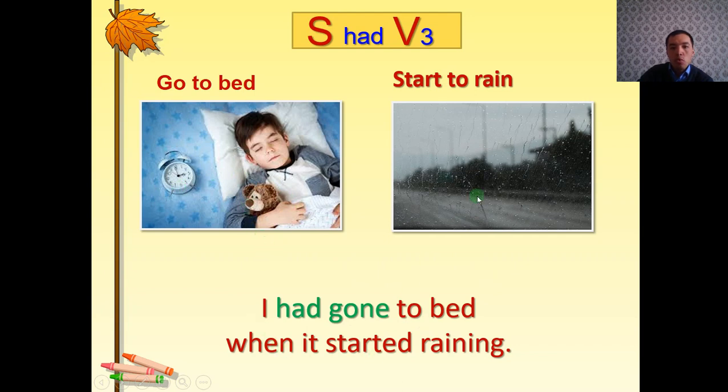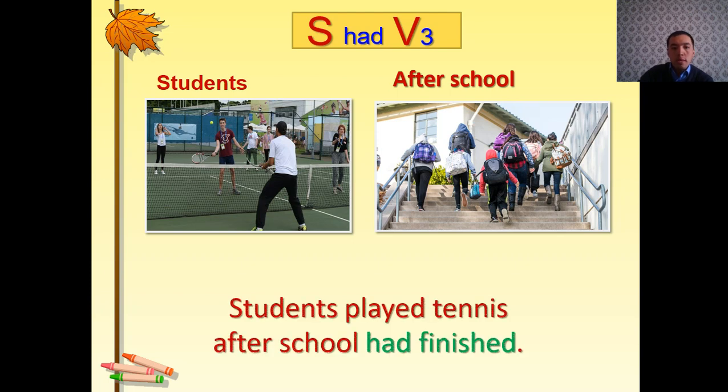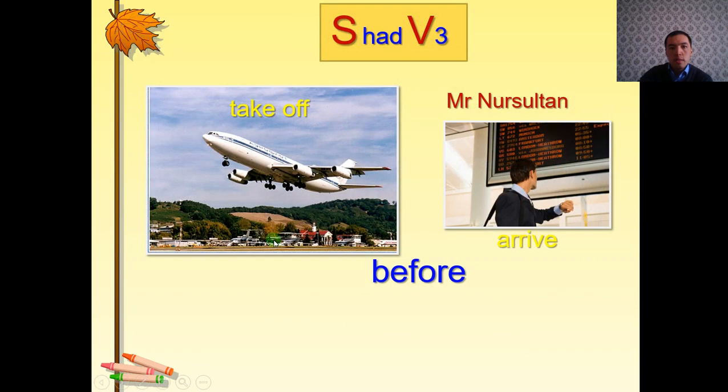Also same question, make one sentence. Again you have ten seconds. Okay, students played tennis after school had finished. So had finished, past perfect. The school had finished is the first action and students played tennis is the second action, as you can see in this picture.